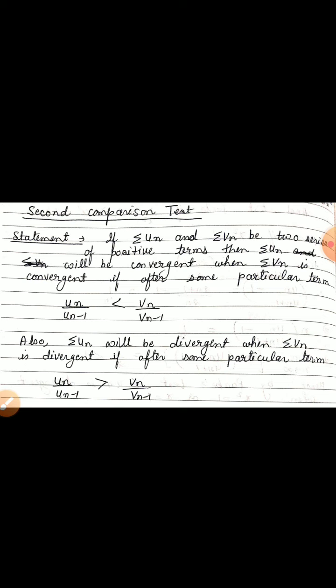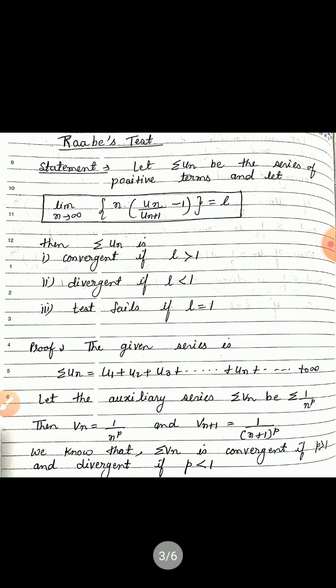We will use the Second Comparison Test in the proof of Raabe's test. Raabe's test is a very important result both for proof and numericals. The statement is: let summation u_n be a series of positive terms and let limit as n tending to infinity of n*(u_n/u_{n+1} - 1) = l. Then summation u_n is: first, convergent if l > 1; second, divergent if l < 1; and third, the test fails if l = 1.